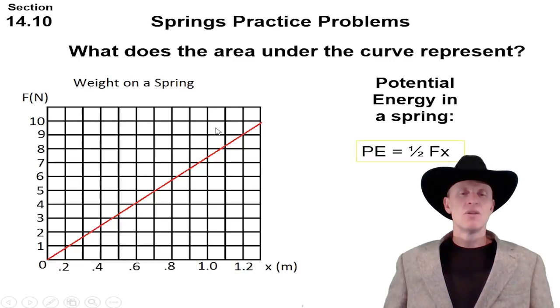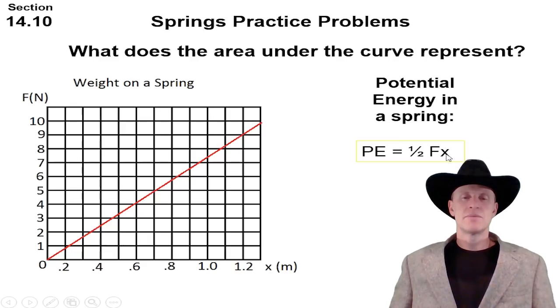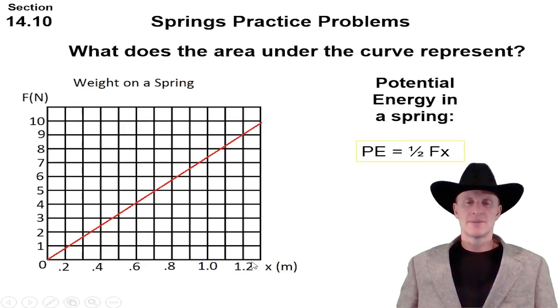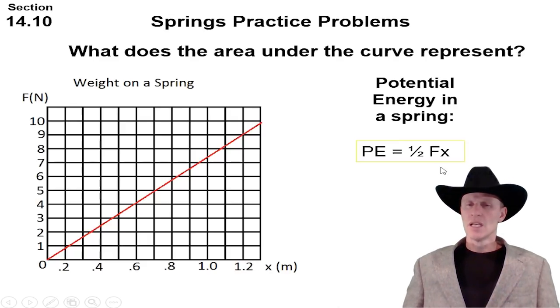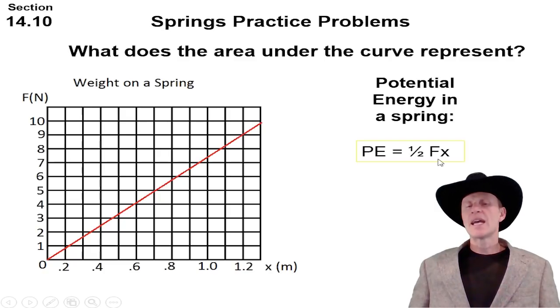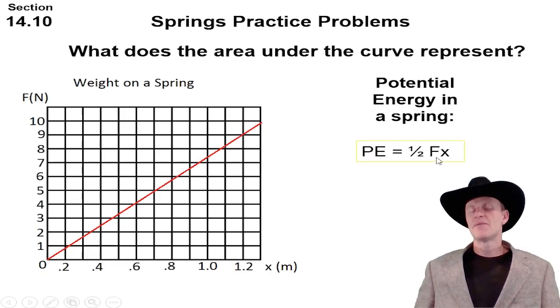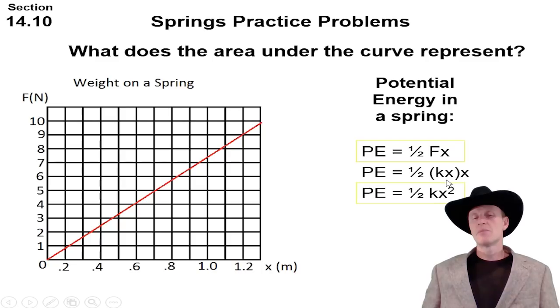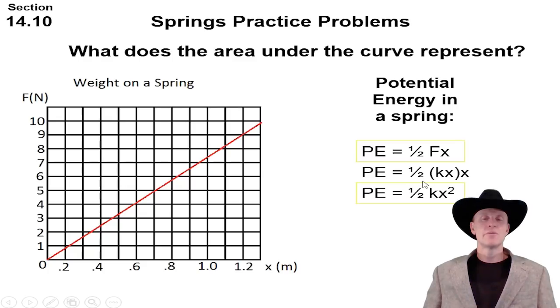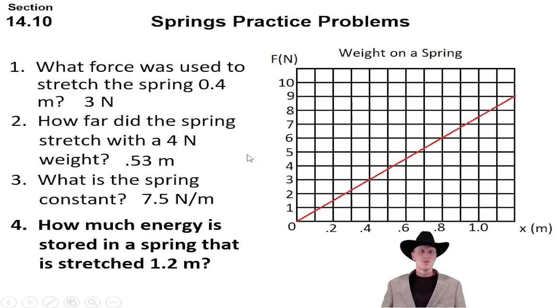Now we know that F equals kx, and we can replace this F in the formula with kx and come up with another equation for the potential energy to be one half of kx squared. So either formula can be used to calculate the potential energy.